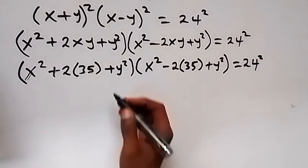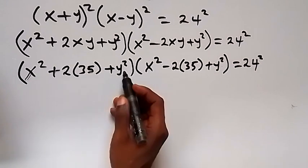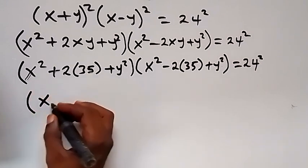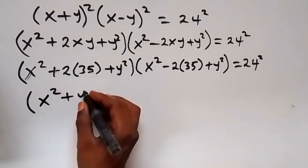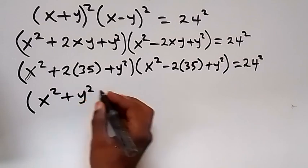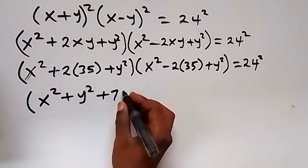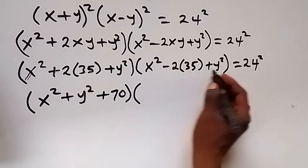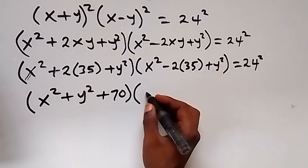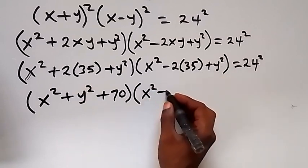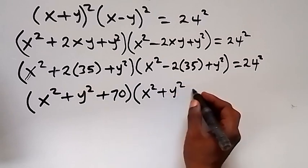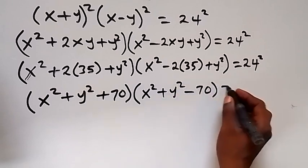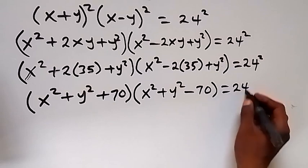When we simplify each bracket, we bring the x and y terms together. The first bracket gives us x squared plus y squared plus 70, and the second bracket gives us x squared plus y squared minus 70, which equals to 24 squared.